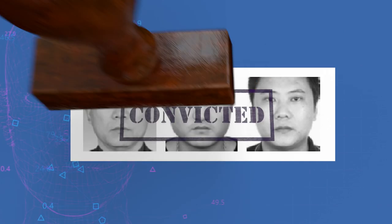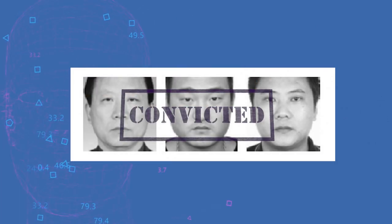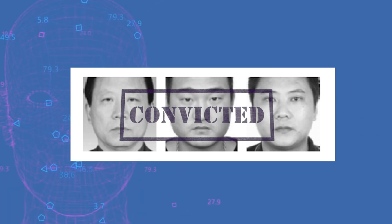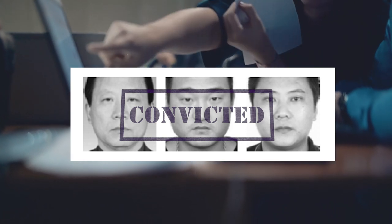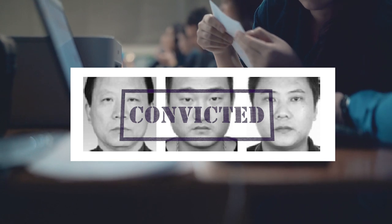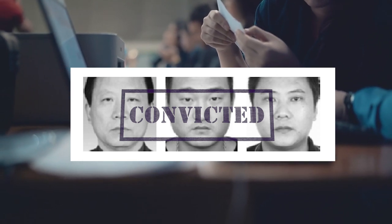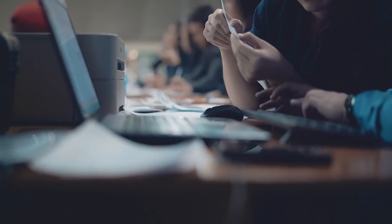A second source of bias is that the authors are using photographs of convicted criminals. As a result, even if there is some signal here, the machine algorithm could just as easily be responding to the facial features that make someone likely to be convicted by a jury, rather than facial features correlated with actually committing a crime. Sadly, a recent study has found that juries do judge people on looks, and unattractive individuals are more likely to be found guilty in jury trials than their more attractive peers.